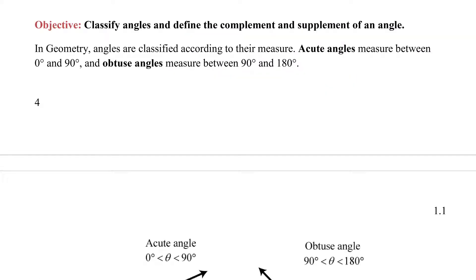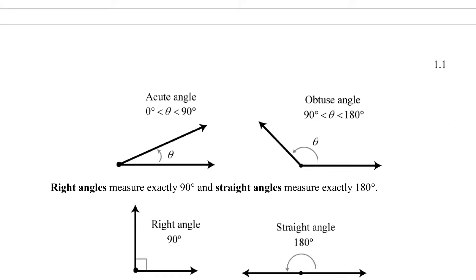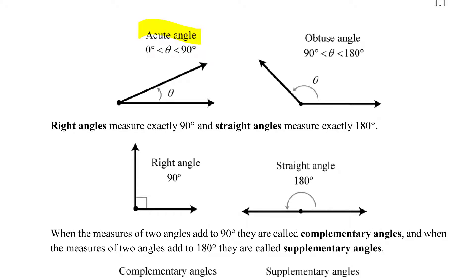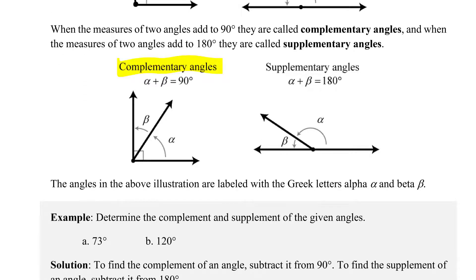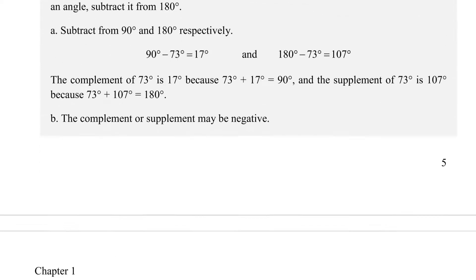Still in Section 1.1, we want to talk about different types of angles. Acute angles are between 0 and 90 degrees; obtuse angles are greater than 90 degrees. A right angle is exactly 90 degrees, and straight angles add up to 180 degrees. I'm not going to test you on this vocabulary specifically, but you need to know it to solve problems. Complementary angles add up to 90 degrees, supplementary angles add up to 180 degrees — those are important to remember.